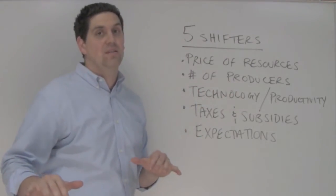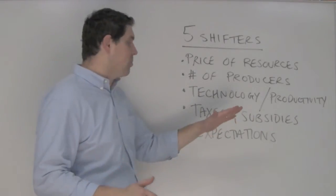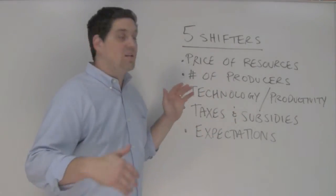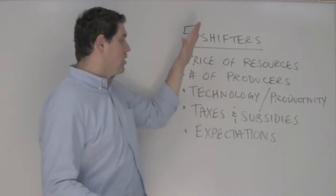Taxes and subsidies and other things the government does. If the government taxes that would cause the supply to shift to the left, a subsidy is money given to firms to produce more, and that would cause the supply to shift to the right.